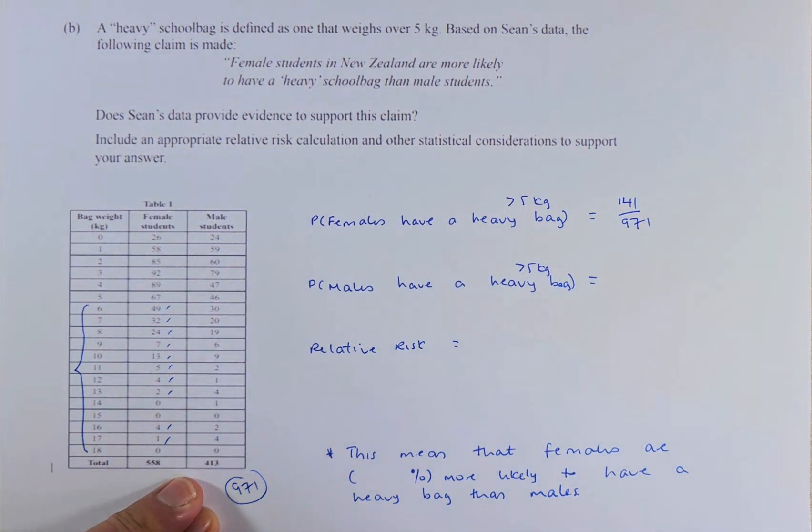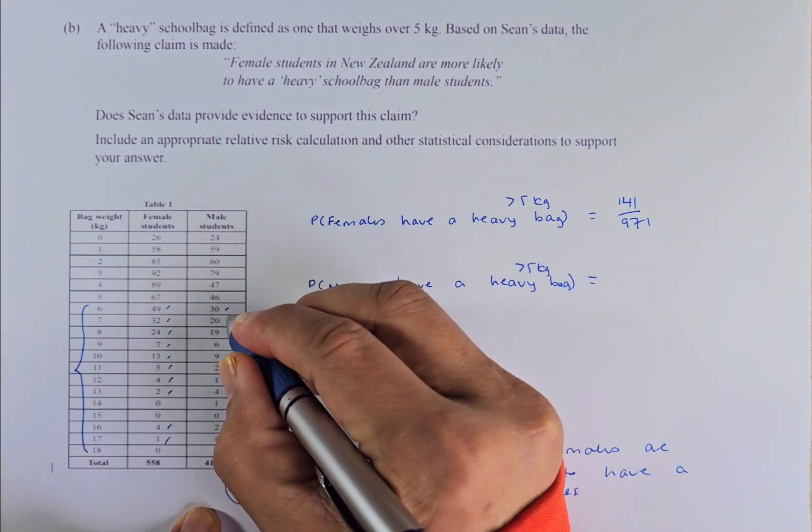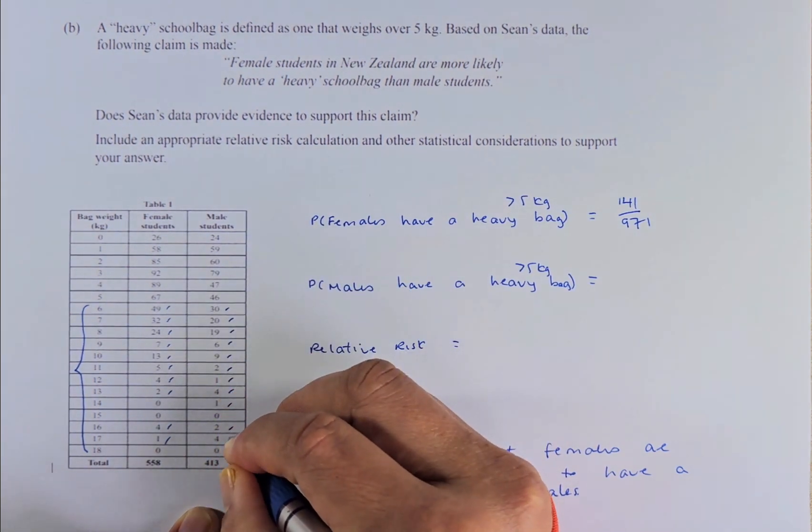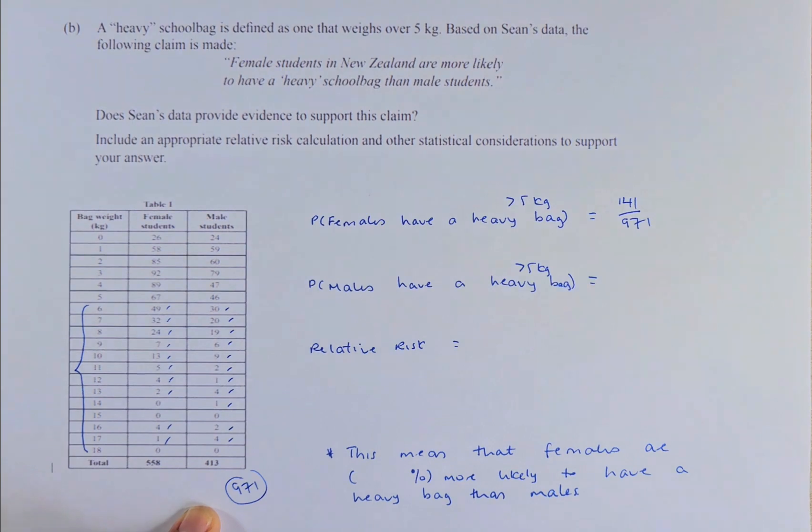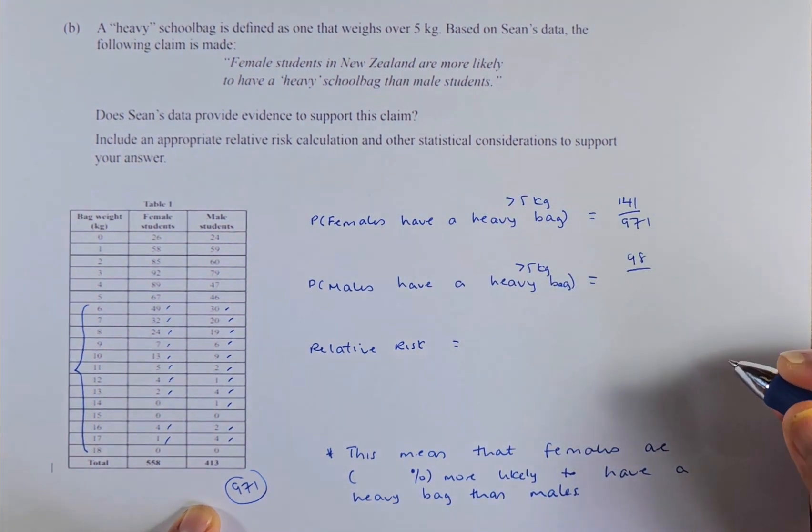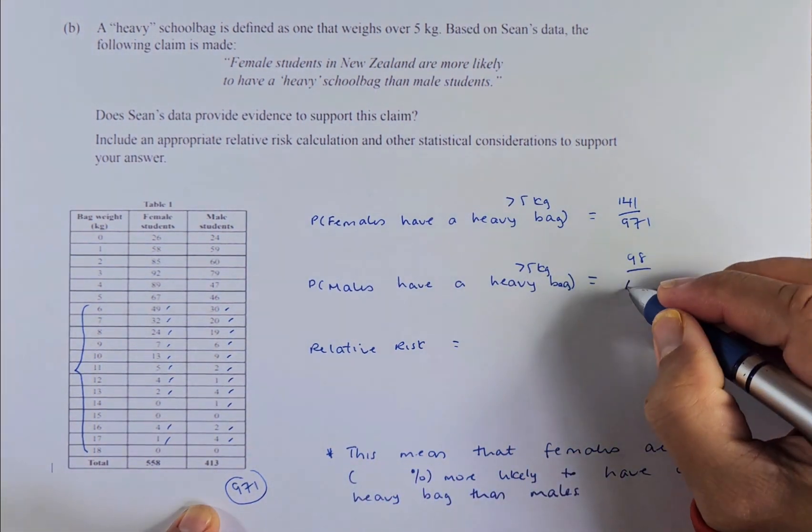Now we are going to do part 2, the probability of males that have a heavy bag. The males, if you are going to count 30, 20, 19, 6, 9, 2, 1, 4, 1, 2, 4. And that will give us a total of, let me calculate again, and the total is going to be 98. There is a total of 98 out of a total of the males, you have a total of 413.